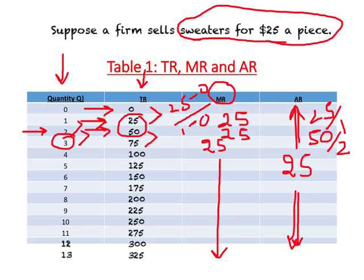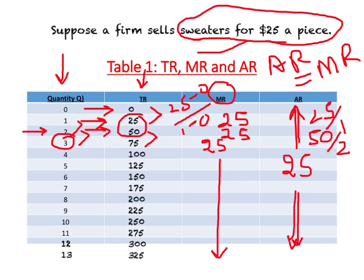What we find is that average revenue equals marginal revenue, and this happens only when the firm keeps the price of its product fixed — that is, when it can sell different quantities of output at a given price. That is when MR equals AR. And since average revenue is the same thing as price, in this case price equals average revenue equals marginal revenue.